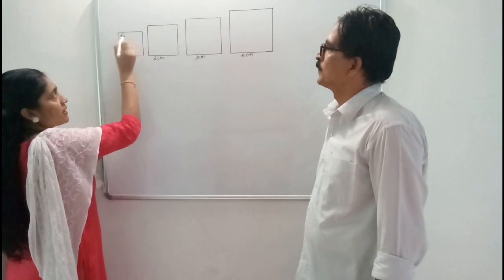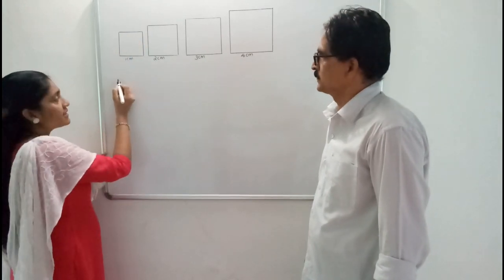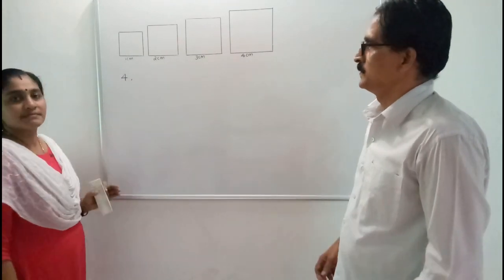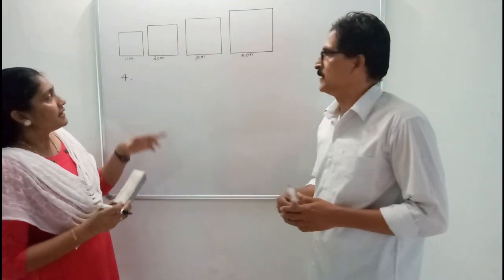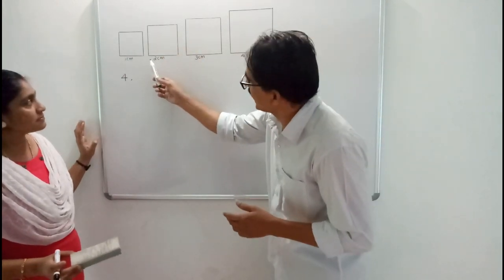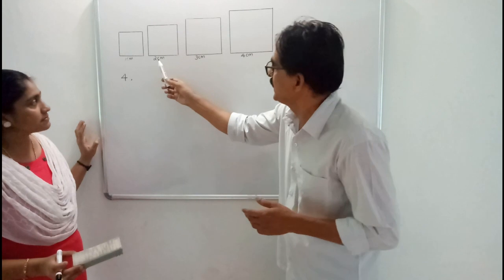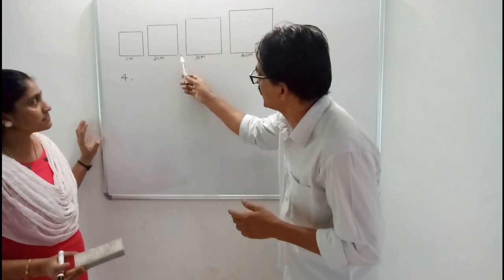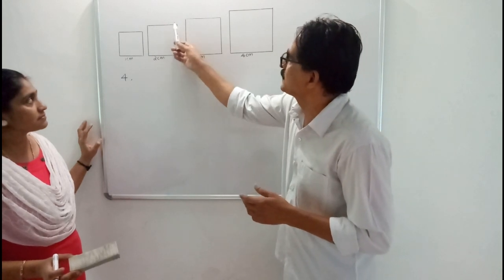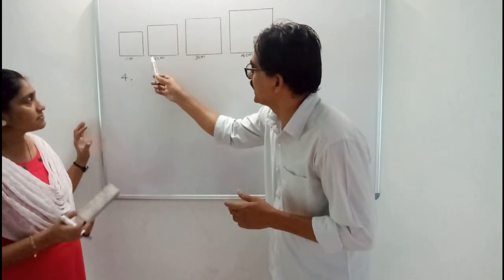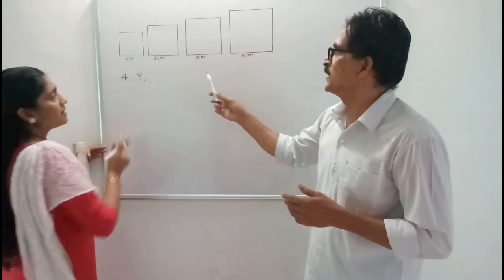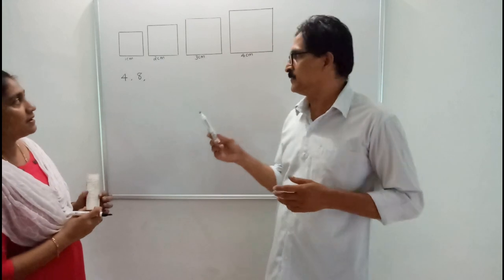Consider a square with side 1cm. Its perimeter is 1 plus 1 plus 1 plus 1, that is 4cm. Similarly, in the second image, you see one side is 2cm — it is a square of 2cm. So the perimeter is equal to 2 plus 2 plus 2 plus 2, that is 8cm. Four twos are 8cm.